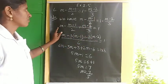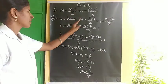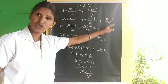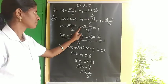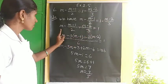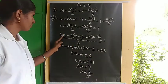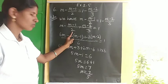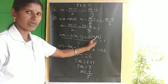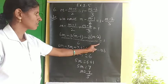Recap of the sixth sum: M minus (M minus 1) by 2 equals 1 minus (M minus 2) by 3. First step: bring the M term to LHS. So M minus (M minus 1) by 2 plus (M minus 2) by 3 equals 1. LCM of 2, 1, 3 is 6. So: 6M minus 3 times (M minus 1) plus 2 times (M minus 2), divided by 6, equals 1.